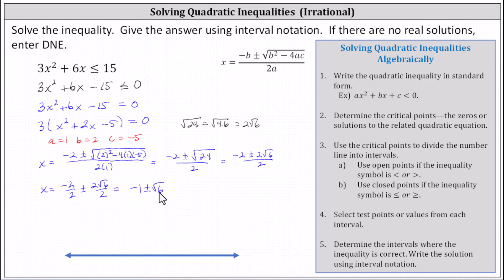So we have two critical points, which we now need to plot on the number line. We always plot critical points as open points or closed points based upon the original inequality. Because our inequality is less than or equal to, the critical points are going to be part of the solution, and therefore we make closed points at the critical points.